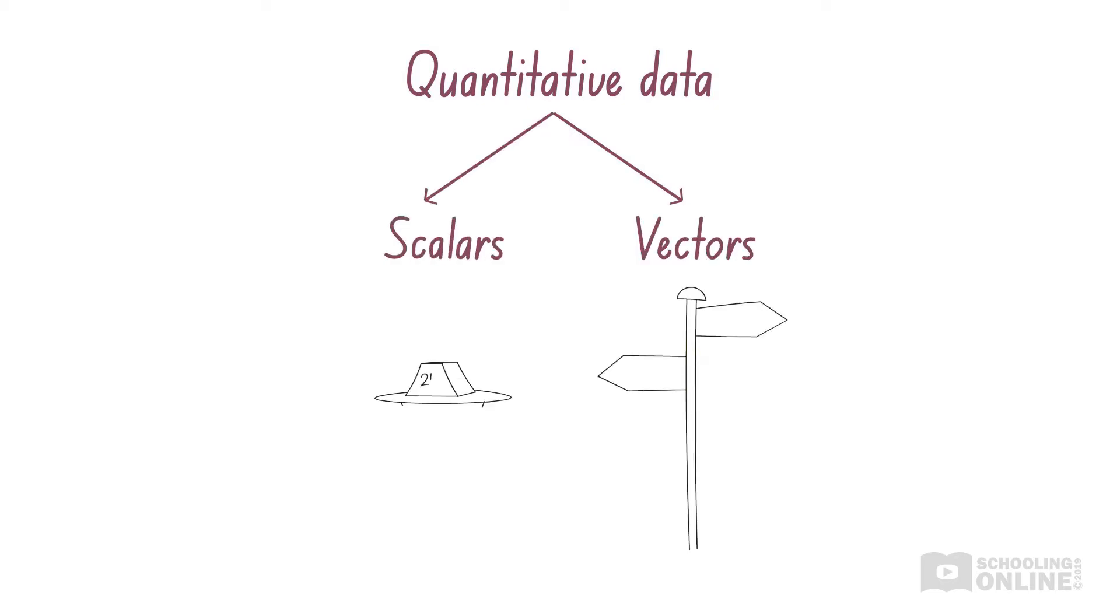In fact, all quantitative data that we encounter in science can be classified as either a vector or a scalar. Simply put, vector quantities include a direction, while scalar quantities do not.